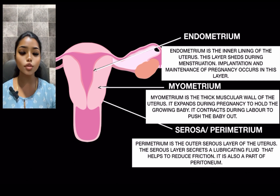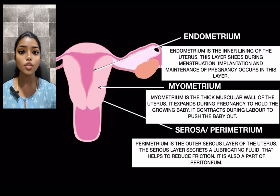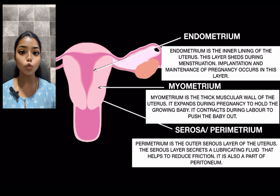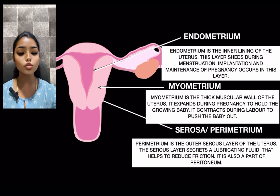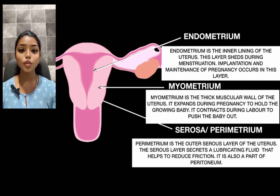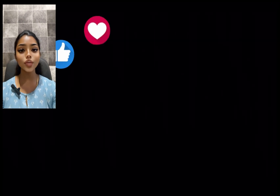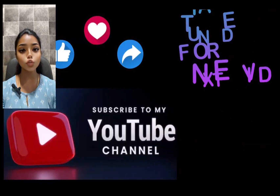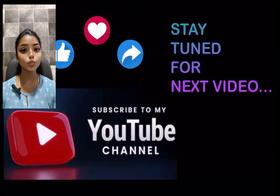Next is the serosa, also called the perimetrium. This perimetrium is the outermost lining of the uterus. It secretes a lubricant fluid that helps to reduce friction, and it is also a part of the peritoneum. Hope you like this video — do like, share and subscribe to our channel. Stay tuned for the next video. Bye-bye.